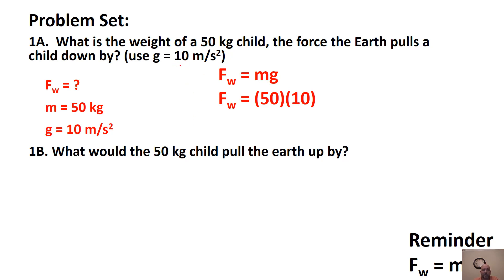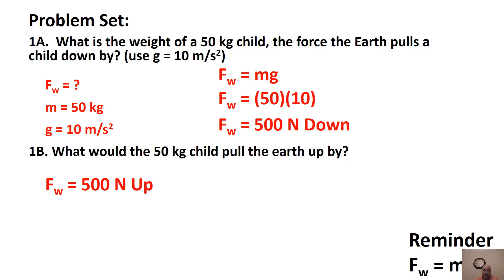In previous lessons we used 9.81 for comparisons between planets, but 10 is a good working average. So the Earth pulls the child down by 500 newtons, and by Newton's third law, the child pulls the Earth up by 500 newtons. You can see this in the acceleration when a person jumps — the Earth is much more massive, so the force is the same but the Earth's resulting acceleration is imperceptibly small.